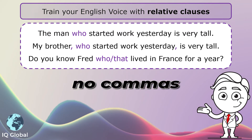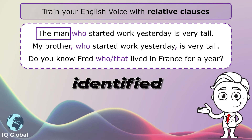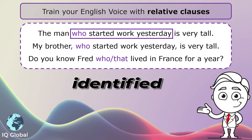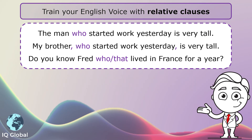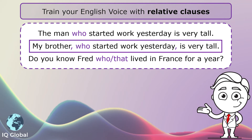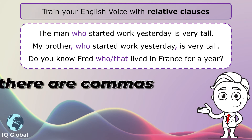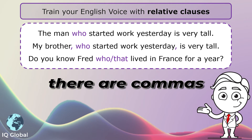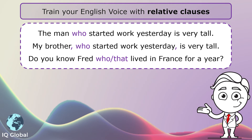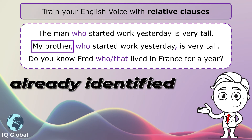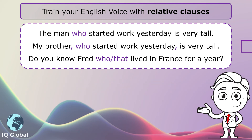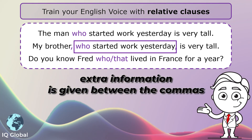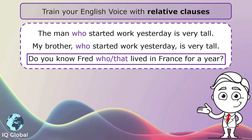The man who started work yesterday is very tall. We see there are no commas in the sentence, and the man is identified as the one who started work yesterday. My brother, who started work yesterday, is very tall. We see the commas in the sentence. My brother is already identified and extra information is given between commas.